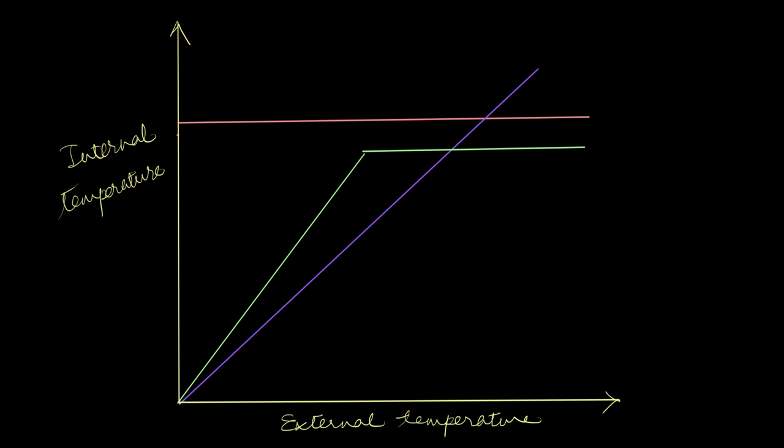Now in the end, to sum it all up, we're going to have our regulators maintaining their temperature just fine. Then we have the conformers, where they're going to change it constantly. And then we finally have the partial regulators, which will look half like the conformers and half like the regulators. But you know what? Sometimes all of this conforming and regulating is just not enough for some organisms.